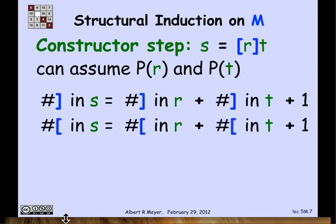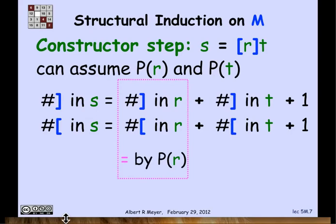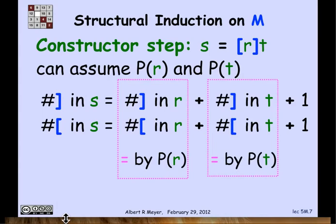By exactly the same reasoning, the number of left brackets in S is the number left in R, left in T, plus 1. Now, because of hypothesis P of R, the number of right and left brackets in R are equal. And likewise, by the induction hypothesis P of T, the number of right and left brackets in T are equal. And so the right hand sides of both of these equations are equal.